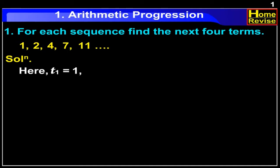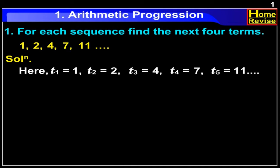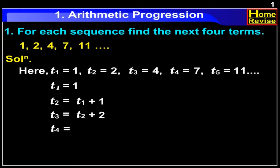Here, T1 is equal to 1, T2 is equal to 2, T3 is equal to 4, T4 is equal to 7, T5 is equal to 11 and so on. Therefore, T1 is equal to 1, T2 is equal to T1 plus 1, T3 is equal to T2 plus 2, T4 is equal to T3 plus 3, T5 is equal to T4 plus 4.